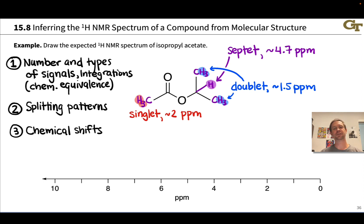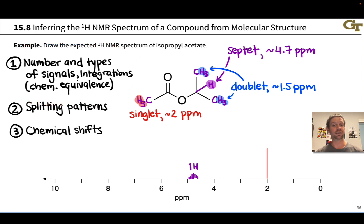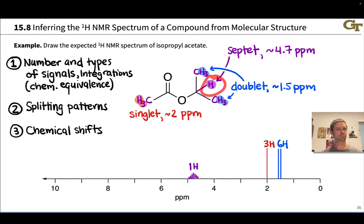Having laid down all that information, we can now roughly draw the spectrum. The septet shows up right about 4.7 ppm and integrates to one hydrogen. The integrations follow from the number of hydrogens in each set determined in stage one. The singlet due to the acetyl methyl group appears around 2 ppm and integrates to three. And the doublet due to the isopropyl CH3 groups integrates to six — it's a doublet due to splitting by the methine proton.